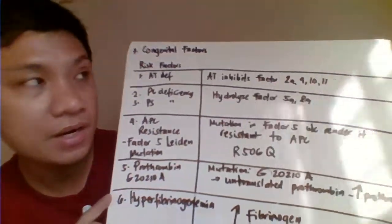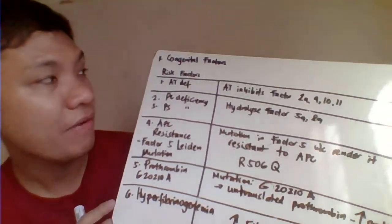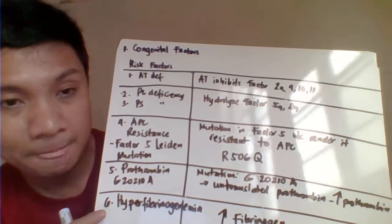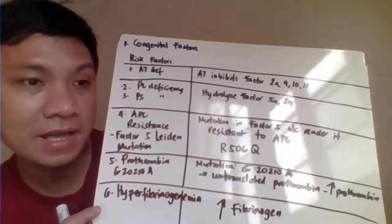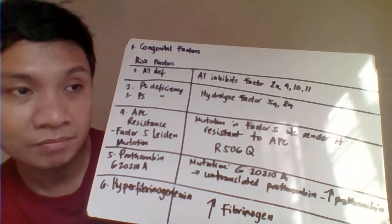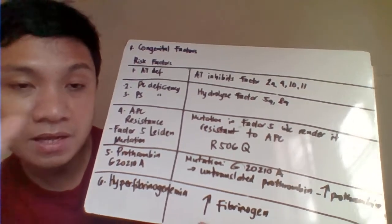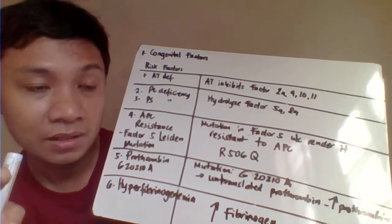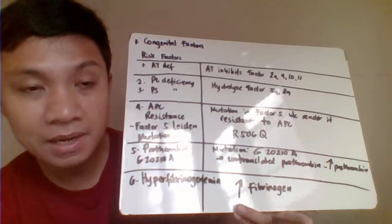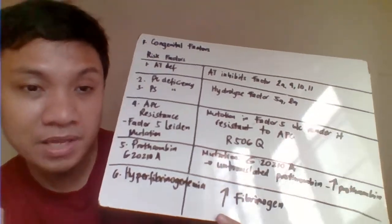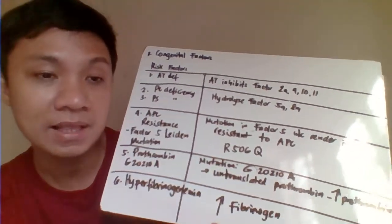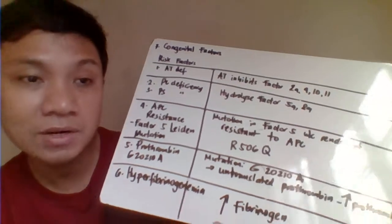Among congenital risk factors, antithrombin deficiency causes thrombosis because antithrombin normally inhibits thrombin, which converts fibrinogen to fibrin clot. Without antithrombin, thrombin keeps converting fibrinogen to fibrin clot, resulting in thrombosis. Antithrombin inhibits Factor II (thrombin), Factor IX, Factor X, and Factor XI.